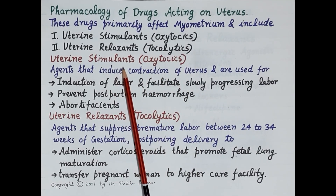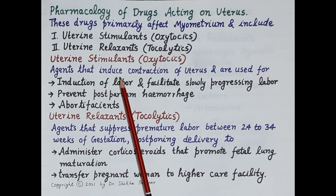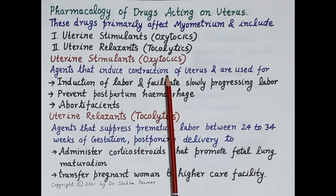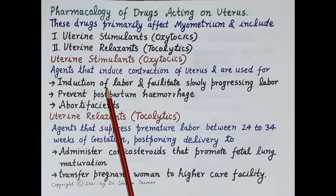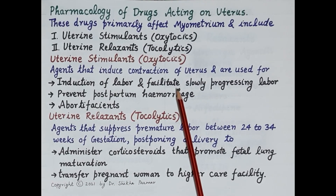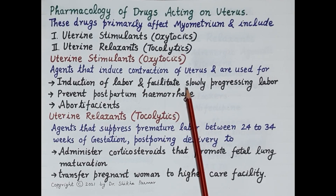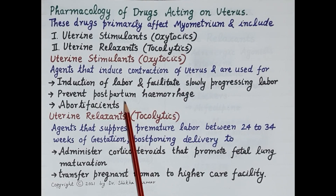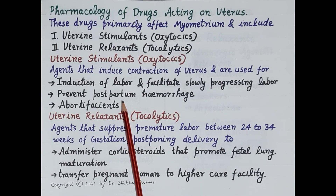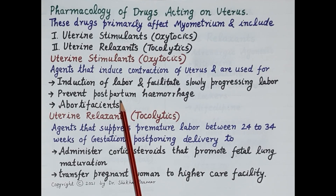Uterine stimulants or oxytocics are agents that induce contraction of the uterus. Since they cause the uterus to contract, they are used in the induction of labor and in facilitating slowly progressing labor, termed uterine inertia. These drugs also prevent postpartum hemorrhage because myometrial contraction compresses blood vessels, preventing loss of blood.